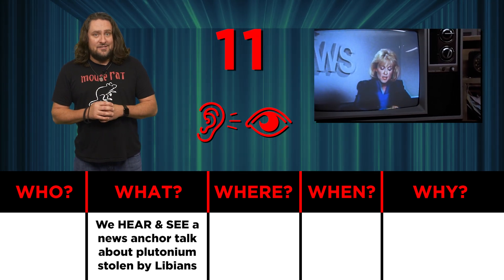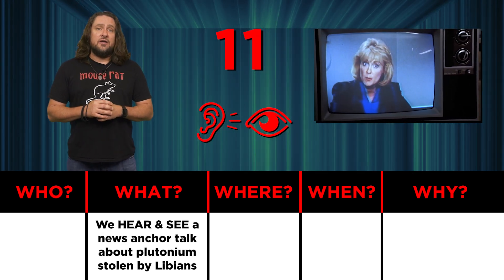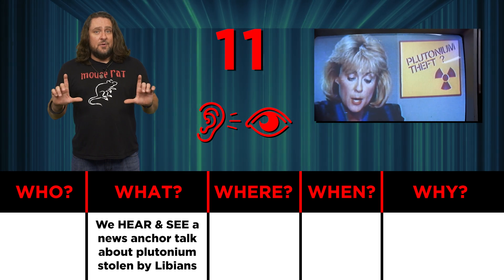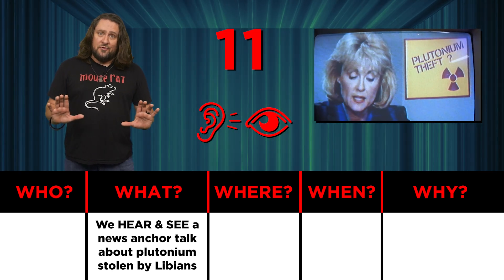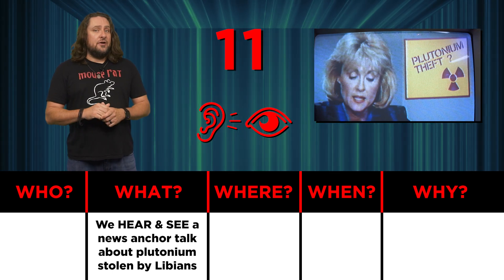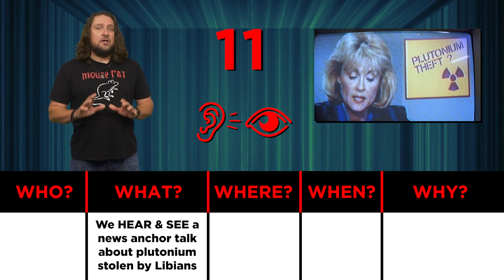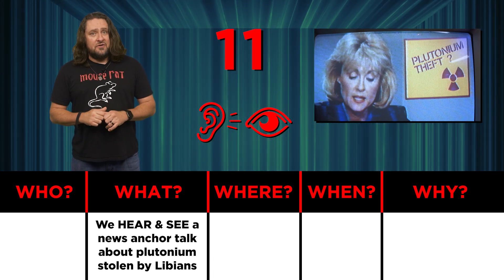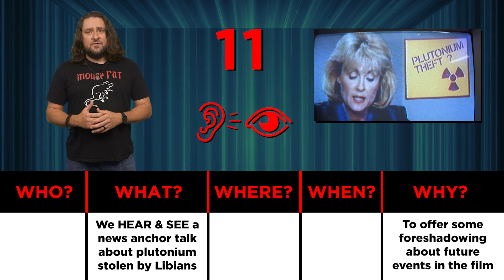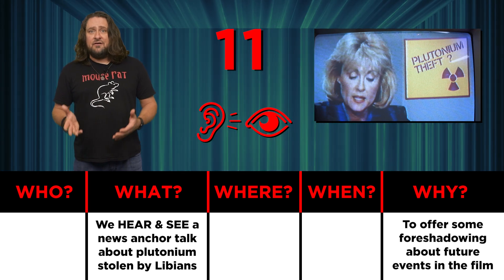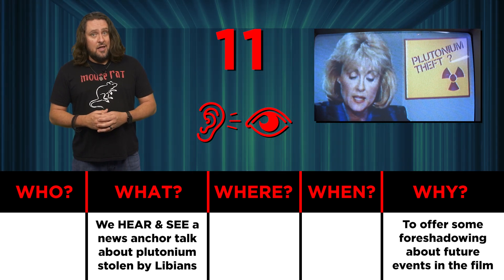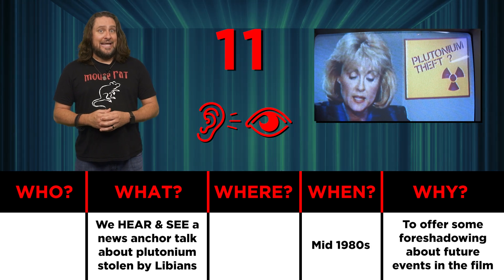Number eleven, we hear and see the TV news anchor talking about plutonium that may or may not have been stolen by Libyan terrorists. Notice how the camera intentionally pushes in on the TV and stops for a moment. Literally everything said or shown on screen for any noticeable amount of time should have a very specific purpose, regardless of how subtle it may appear to be at first. In this case, I'd assume they're trying to offer some sort of foreshadowing about related events that will develop throughout the film. And judging by her shoulder pads and hairstyle, I think it's a pretty safe bet that the movie takes place in the 1980s.